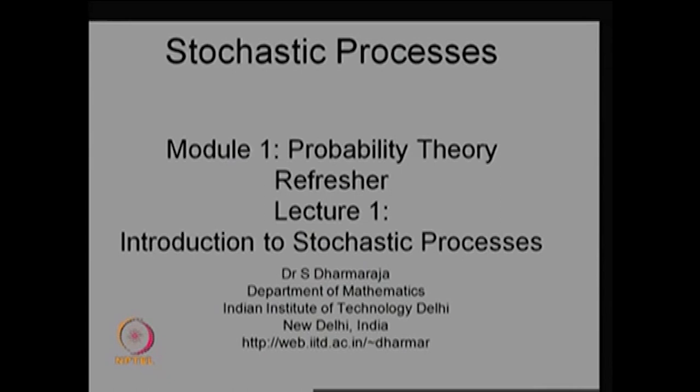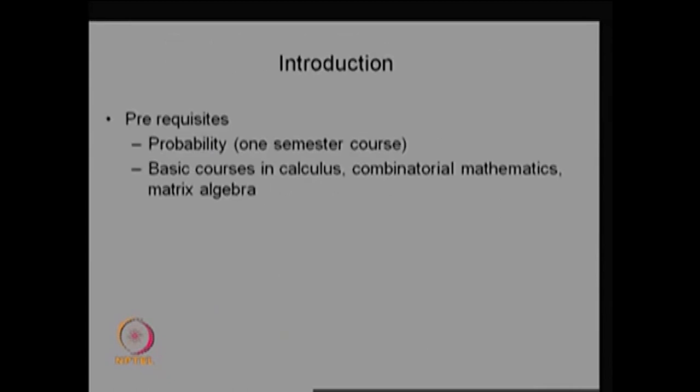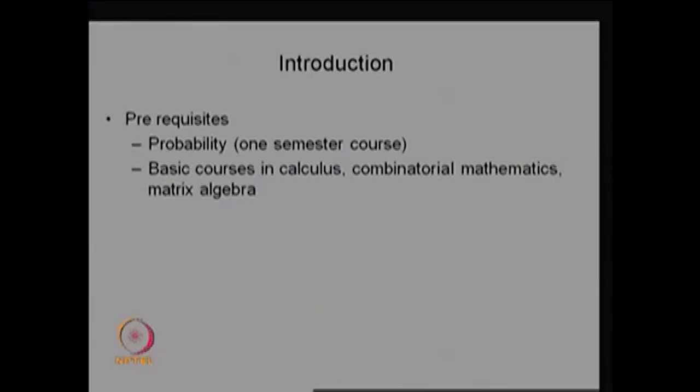Our lecture is on Stochastic Processes. This course needs a prerequisite of probability as a full one-semester course. Most universities have a course on probability theory along with Stochastic Processes, or random processes, or probability and statistics. At least 30 lectures of probability theory are needed for this Stochastic Processes course as a prerequisite.